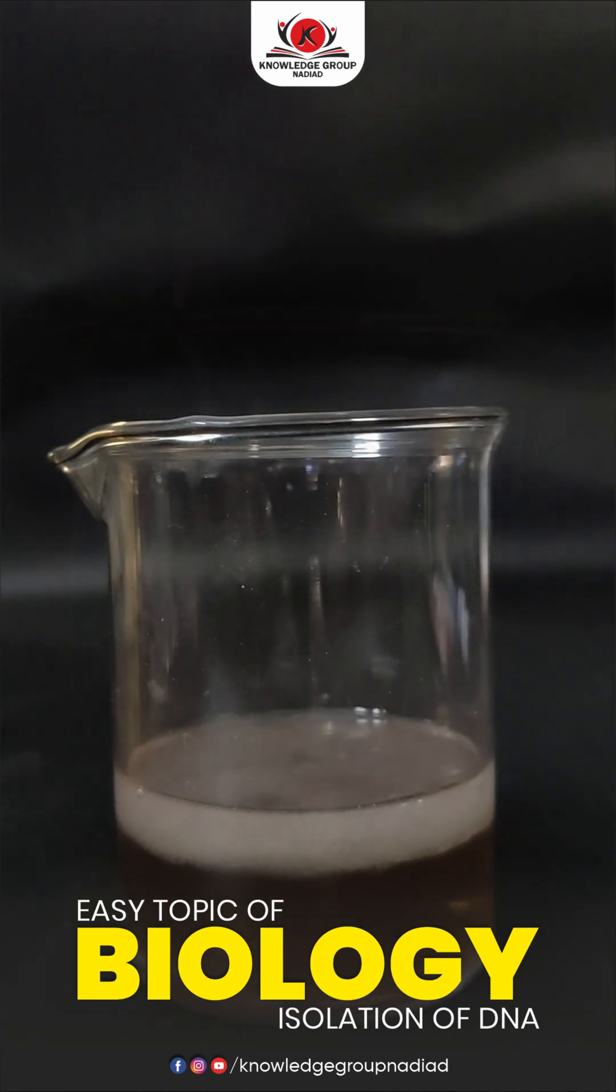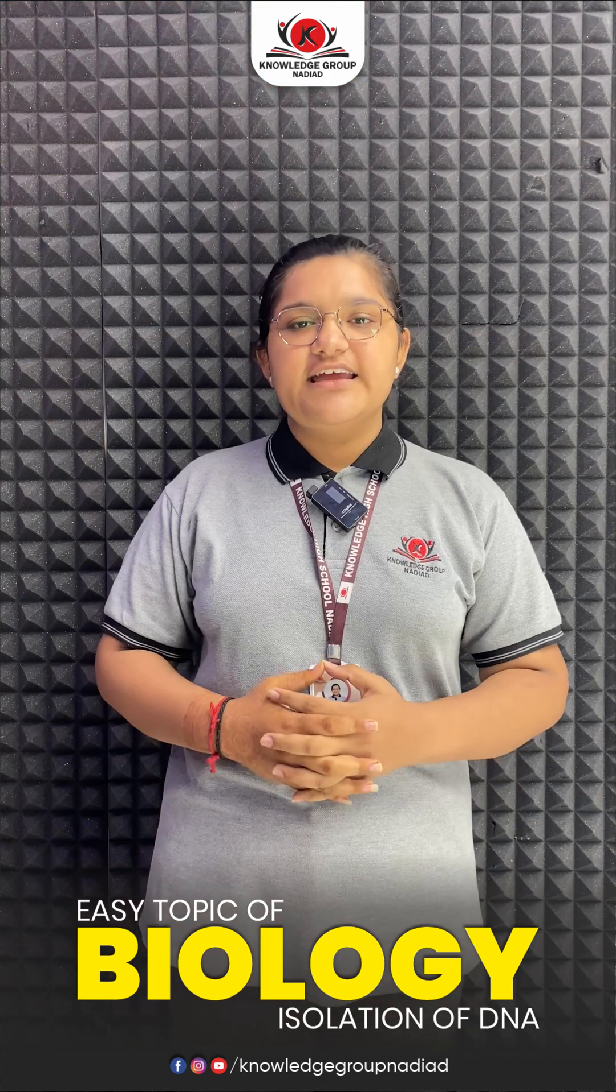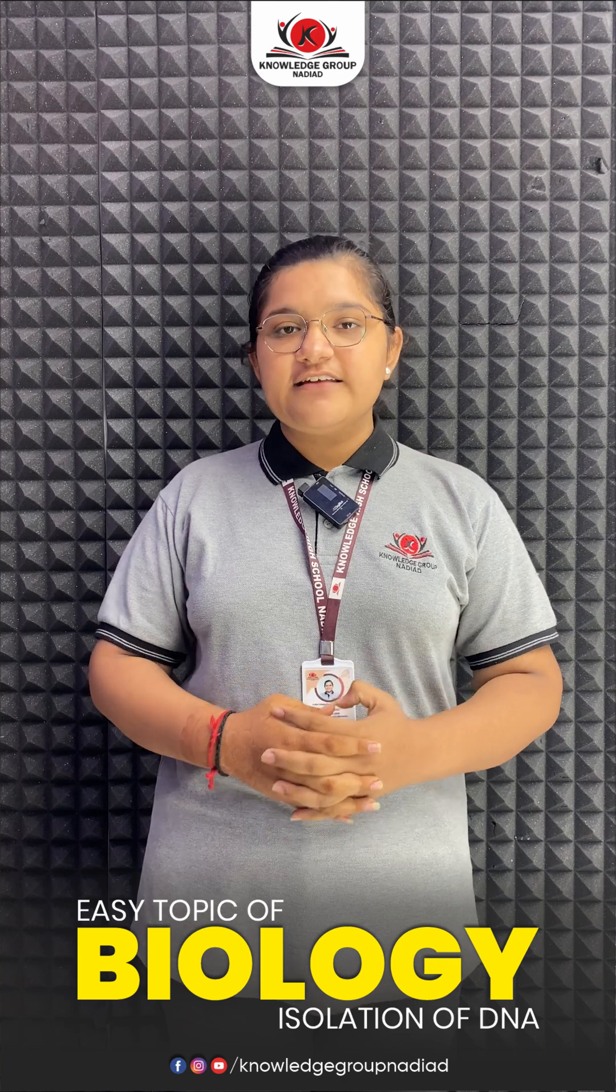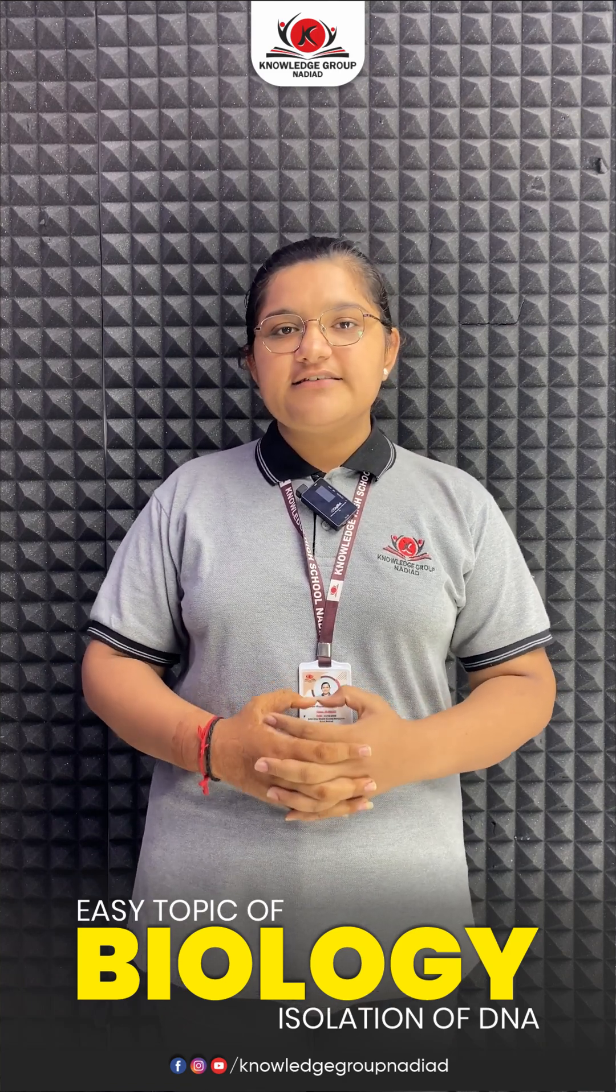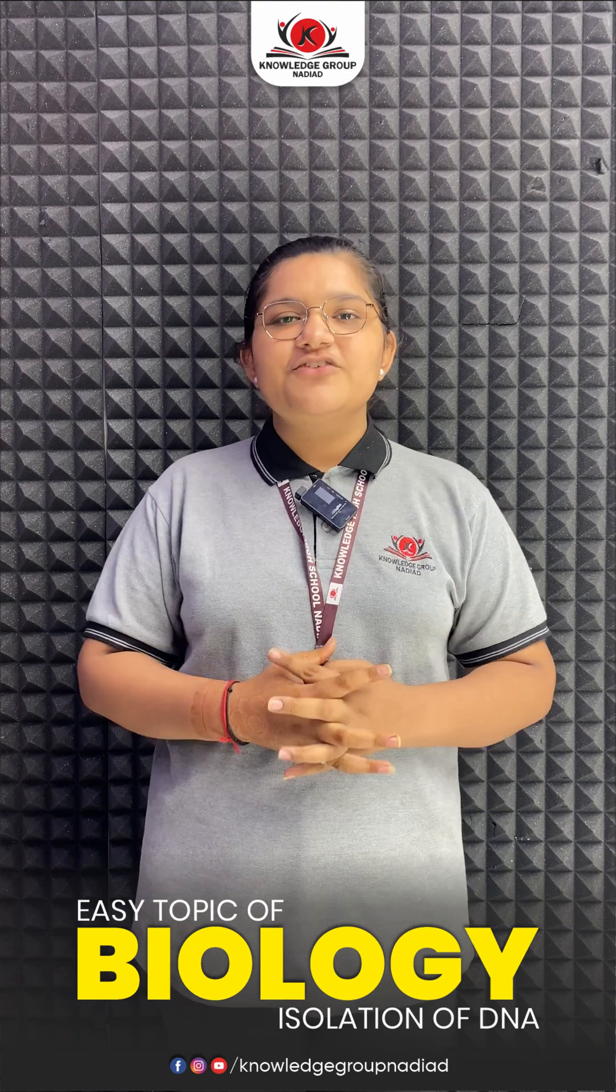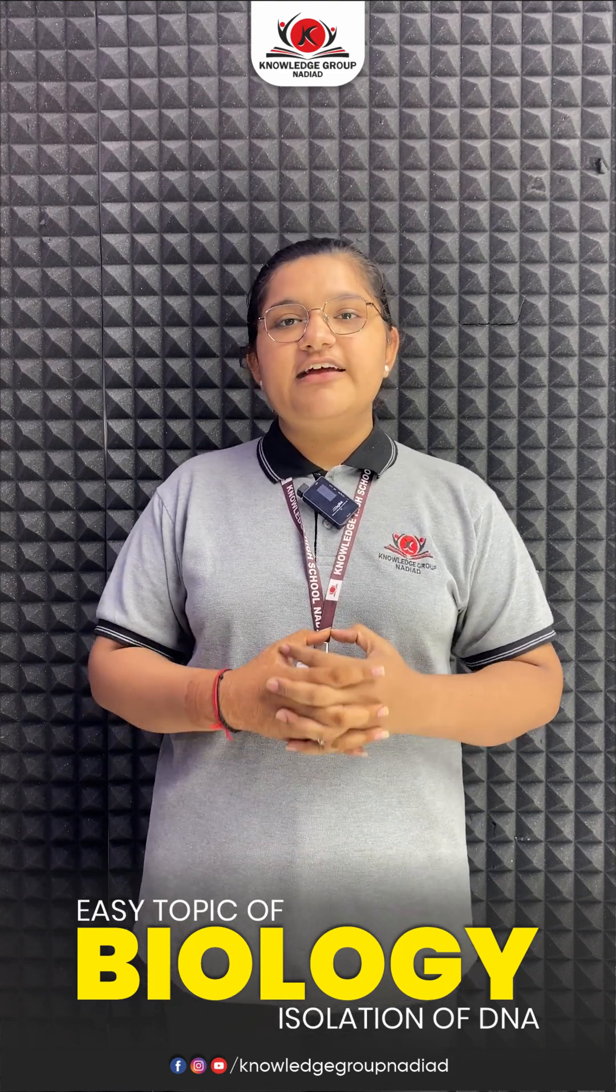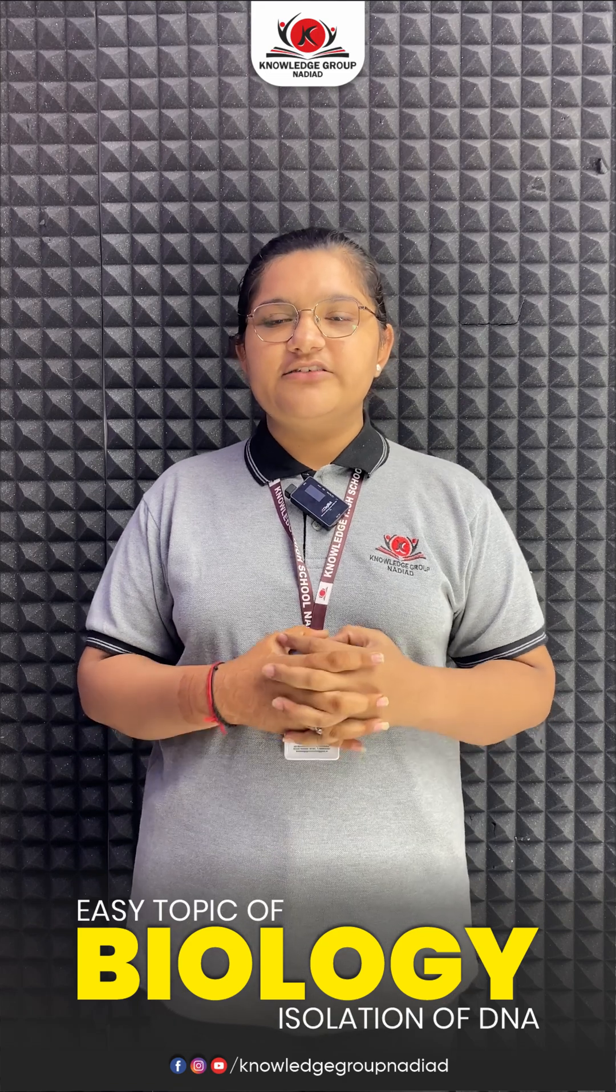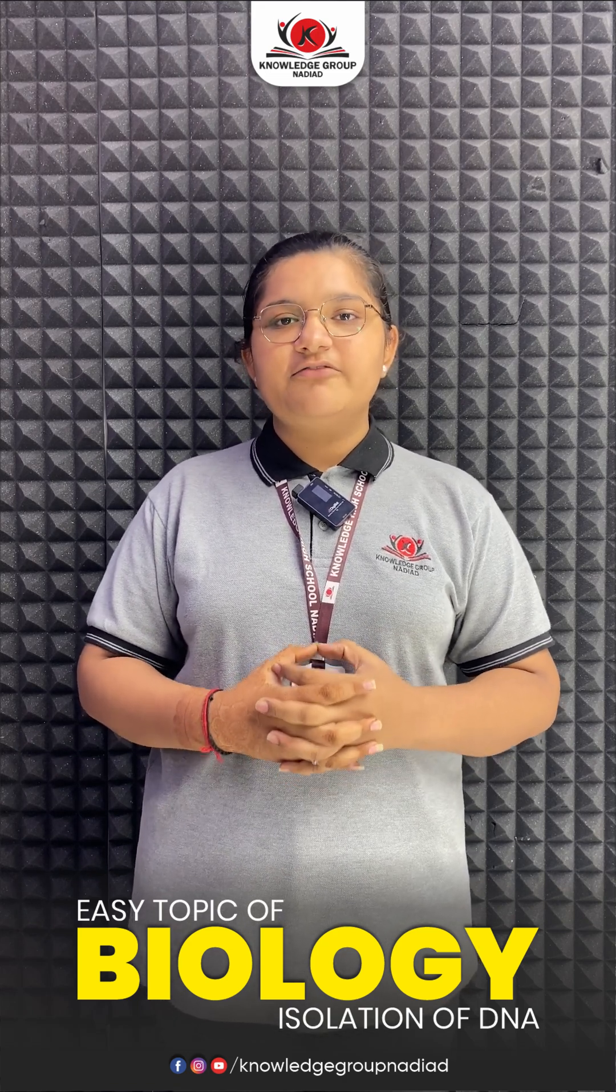As you observed, we first prepared the precipitating solution to destroy the cells, because DNA is present inside the cell, inside the nucleus. Once the cells are broken, the DNA is released and dissolved in the water. When we add isopropyl alcohol to the filtrate, the dissolved DNA precipitates out and appears in the form of white fibrous mass.